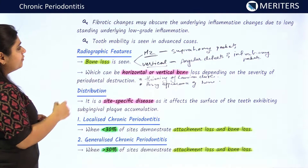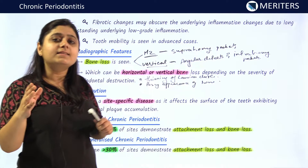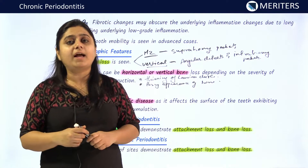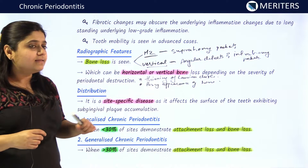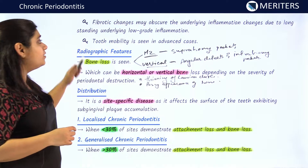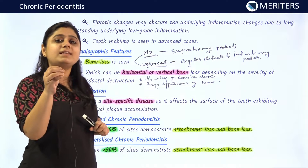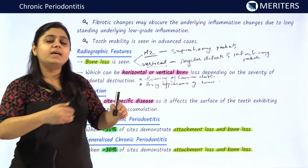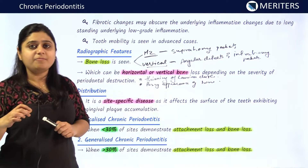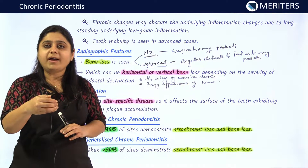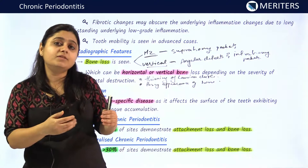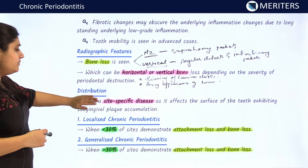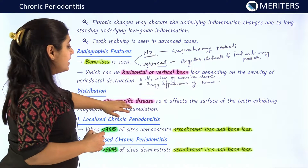Chronic periodontitis is a site-specific disease. It is seen in cases where there are heavy deposits of calculus and plaque present. Thus, the bone loss and attachment loss are consistent with the local factors that are present. This is in contrast with aggressive periodontitis, where the local factors are not consistent with the amount of attachment loss and bone loss seen. So, chronic periodontitis is a site-specific disease.